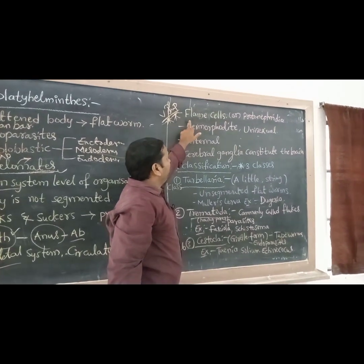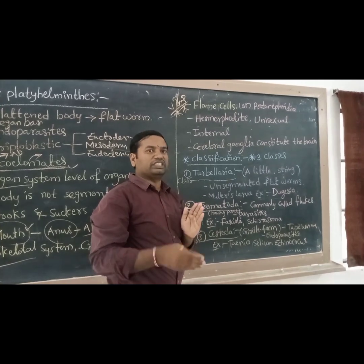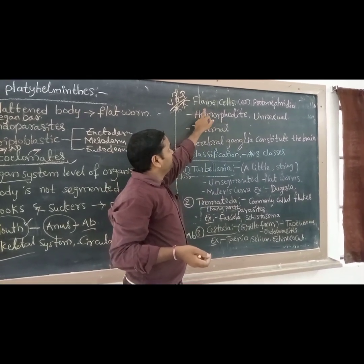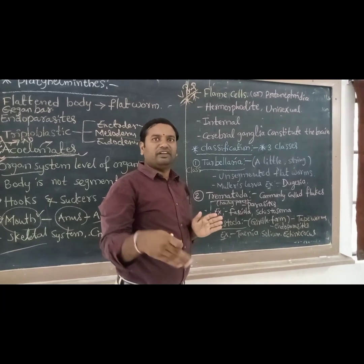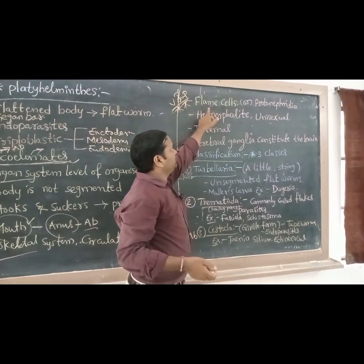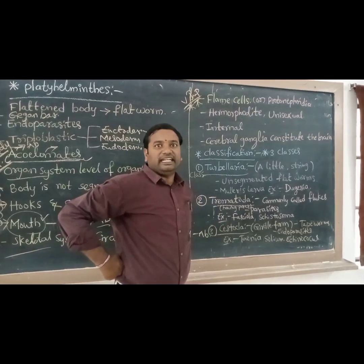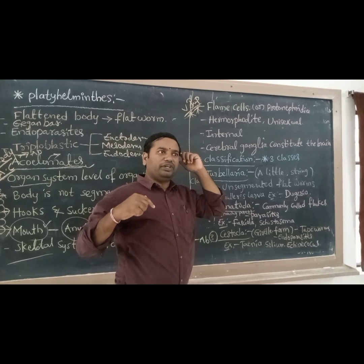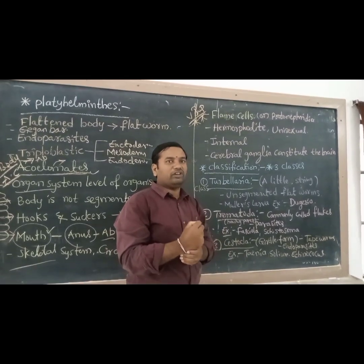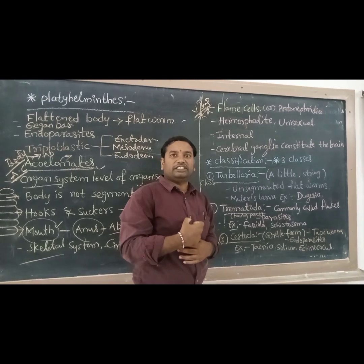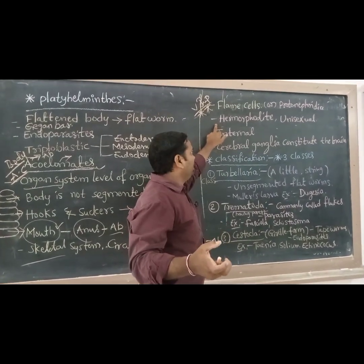Flame cells are present in Platyhelminthes. These specialized cells are called flame cells, used for excretion and osmoregulation. Flame cells are also called protonephridia. The structural and functional unit of the excretory system is nephrons; of the nervous system, neurons; of the muscle system, sarcomere; of bone system, osteon; of respiratory system, alveoli. But flame cells play a very important role in excretion and osmoregulation in Platyhelminthes.